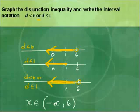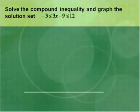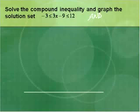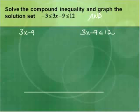Now we're going to solve a compound inequality: −3 ≤ 3x − 9 ≤ 12. You read what's between the inequality signs, reading right and left — this is an example of an AND compound inequality written in this form. You can split it up and solve as two separate inequalities: 3x − 9 ≤ 12 and 3x − 9 ≥ −3. Be careful that the inequality sign opens toward 3x − 9.